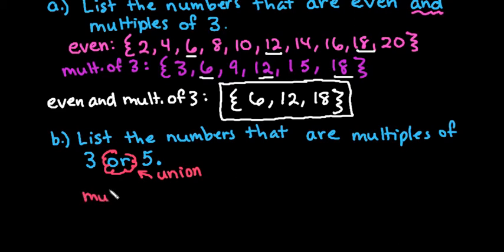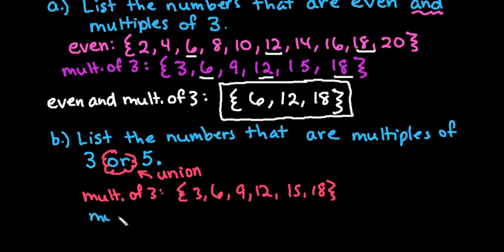Multiples of 3 we just discussed in the last one, so remember that this is the set of numbers 3, 6, 9, 12, 15, and 18. And then multiples of 5 is anything that's divisible by 5, so we would have 5, 10, 15, and 20.